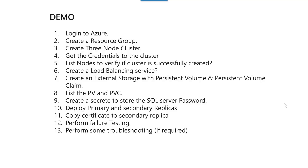Let's understand the steps followed in the demo. First, we will log into Azure with the Azure CLI, then create a resource group in which we will create all our resources. In that resource group we are going to create a three-node cluster, get the credentials of the cluster so we can start connecting, and then list the nodes to verify the cluster is successfully created. Then we will create a load balancing service, followed by external storage with persistent volume and persistent volume claim, and list them to ensure they are successfully created. Finally, we will create a secret to store the SQL Server SA password, and then deploy the primary and secondary replicas with the YML file.